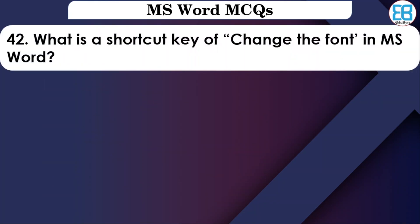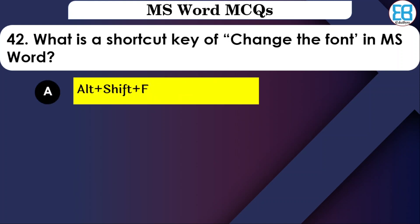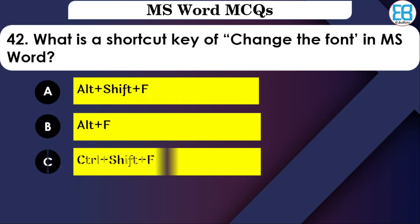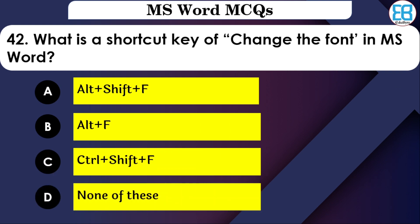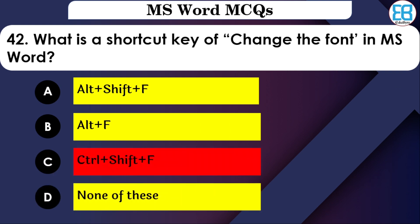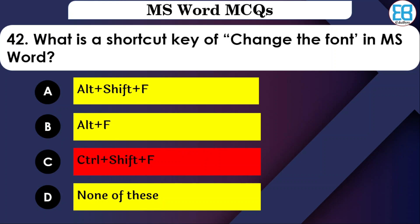What is the shortcut key for changing the font in MS Word? The options are: Alt+Shift+F, Alt+F, or Ctrl+Shift+F. The correct option is Ctrl+Shift+F — use Ctrl+Shift+F to change the font.